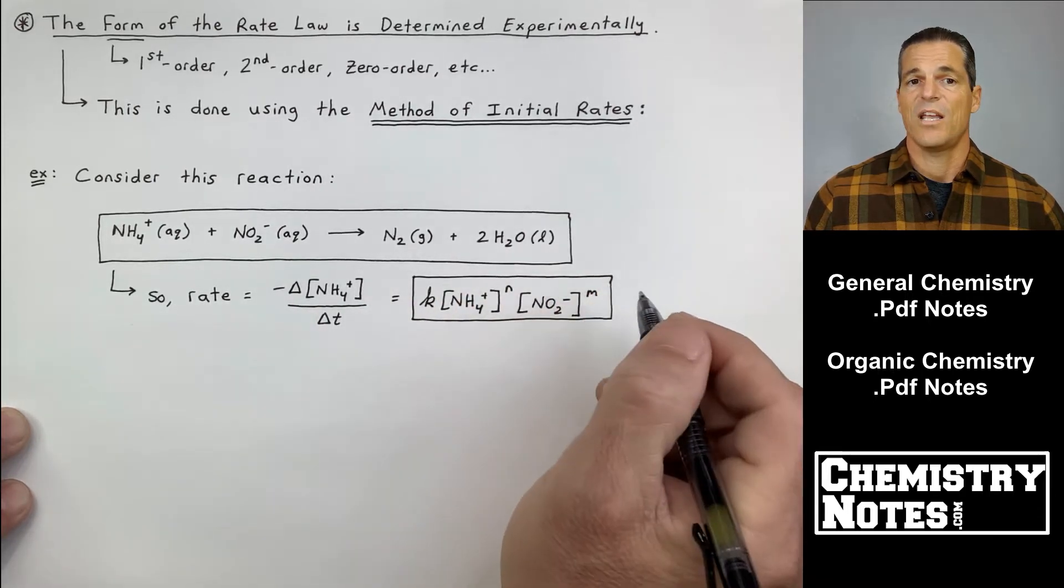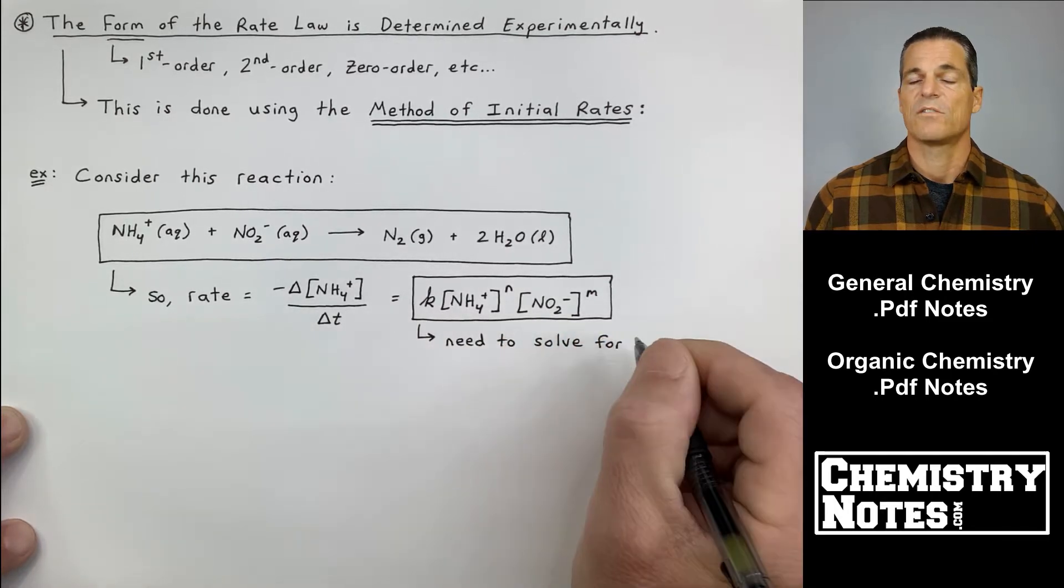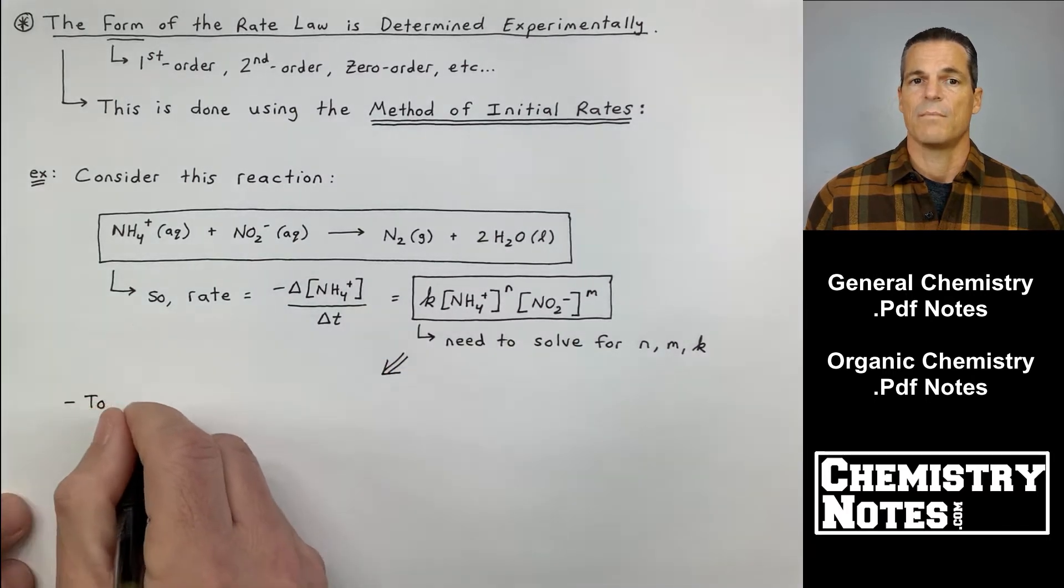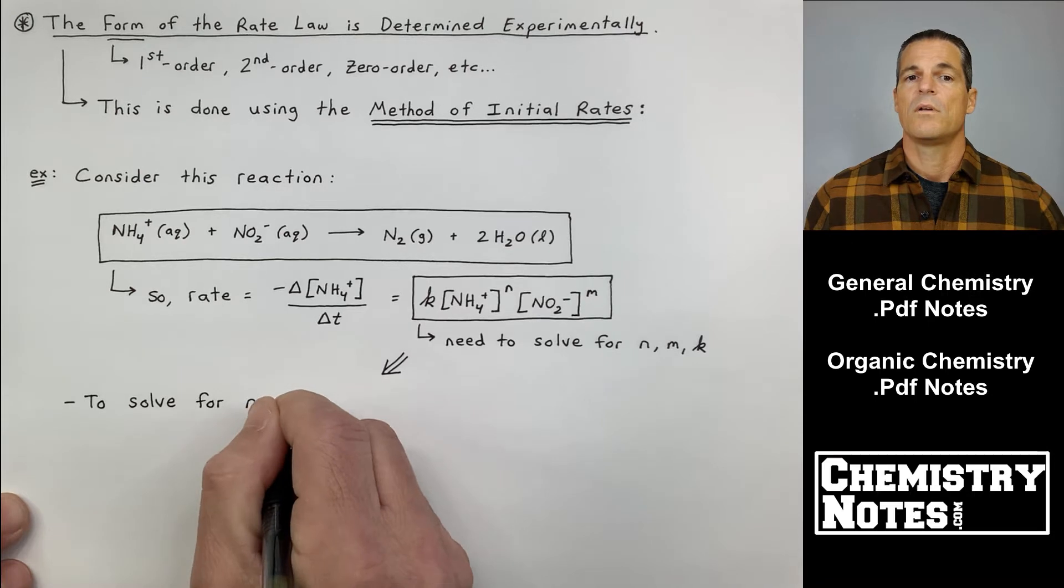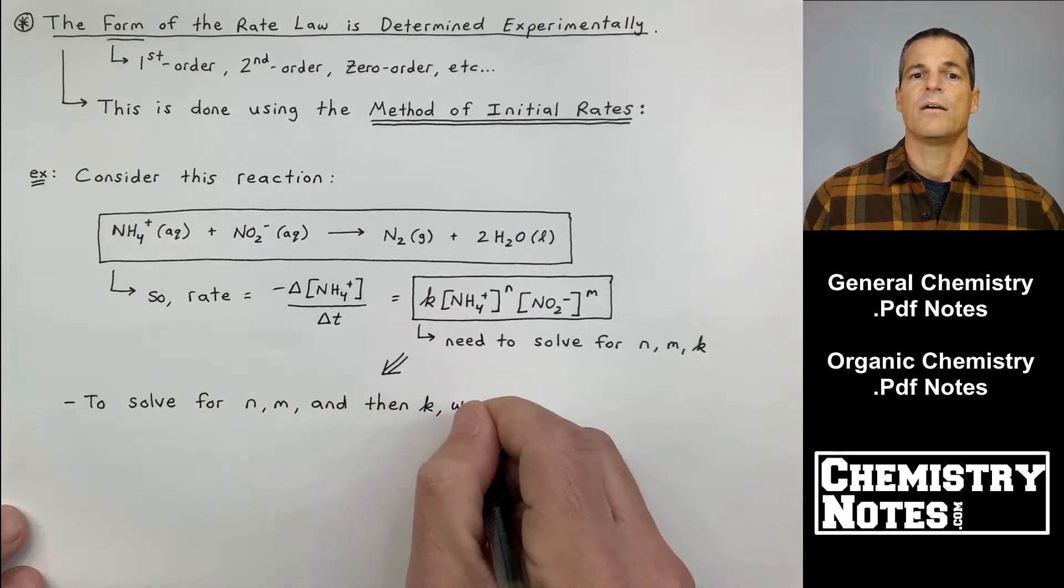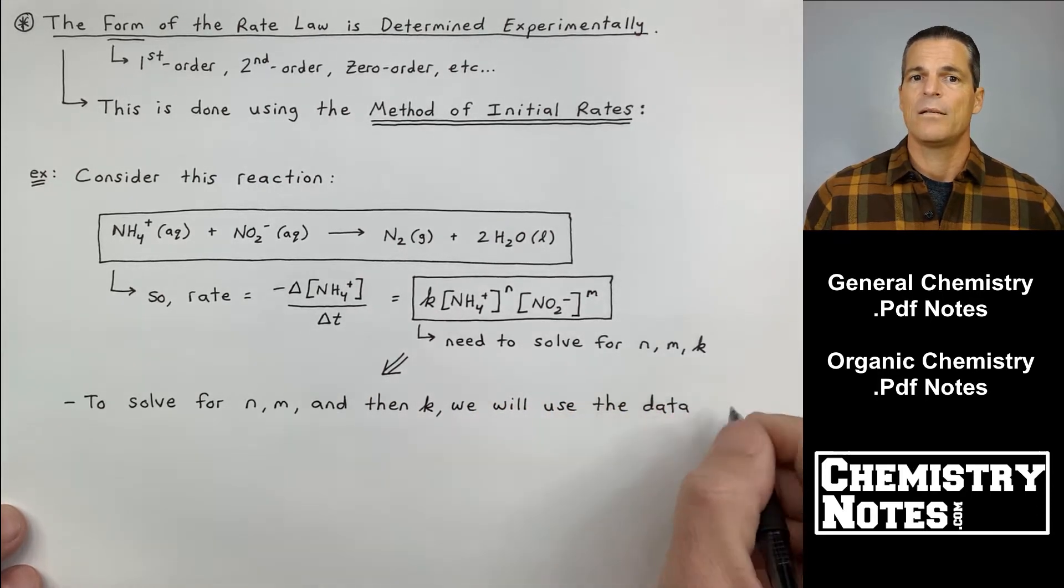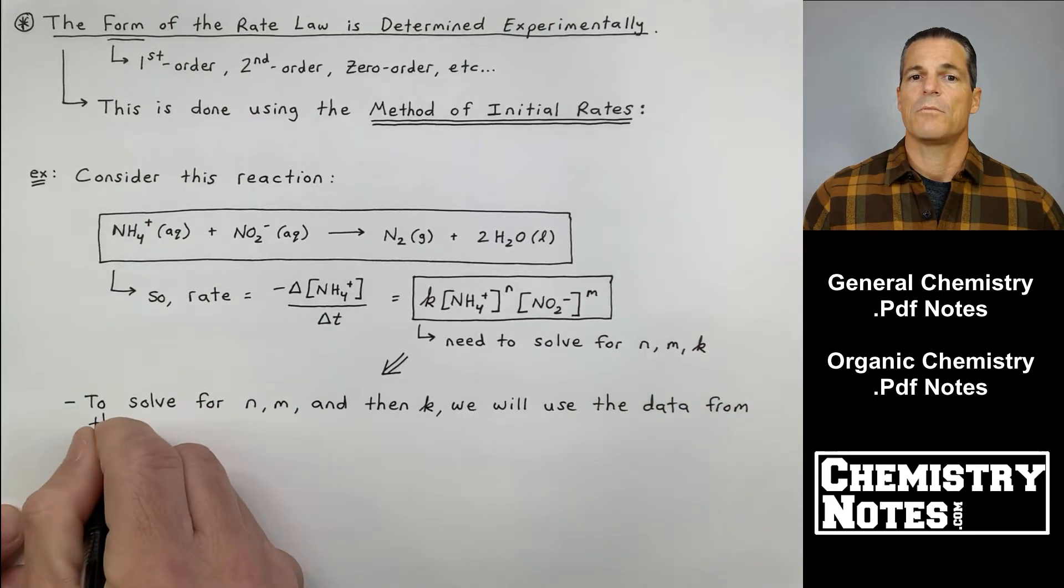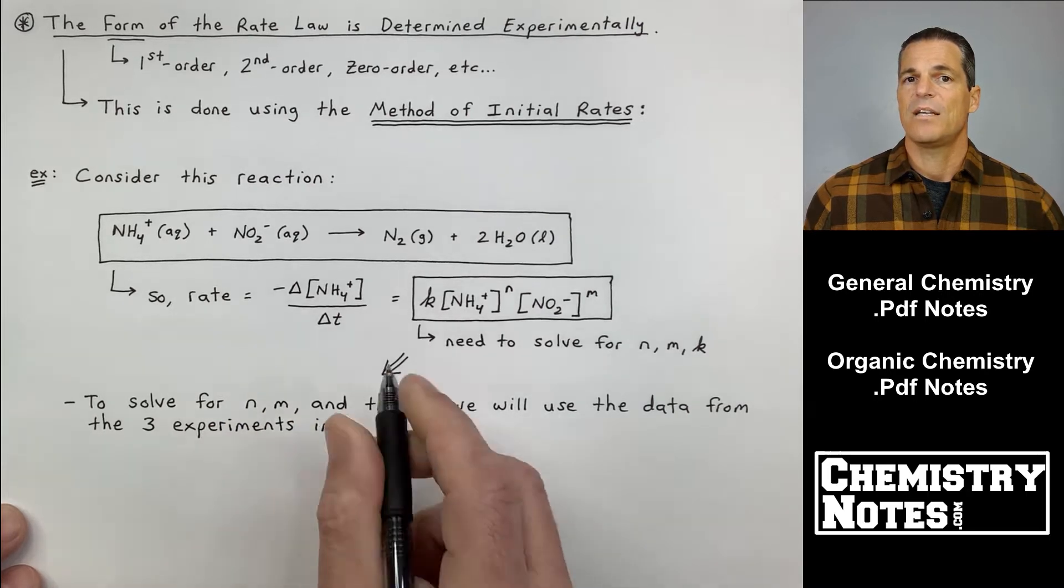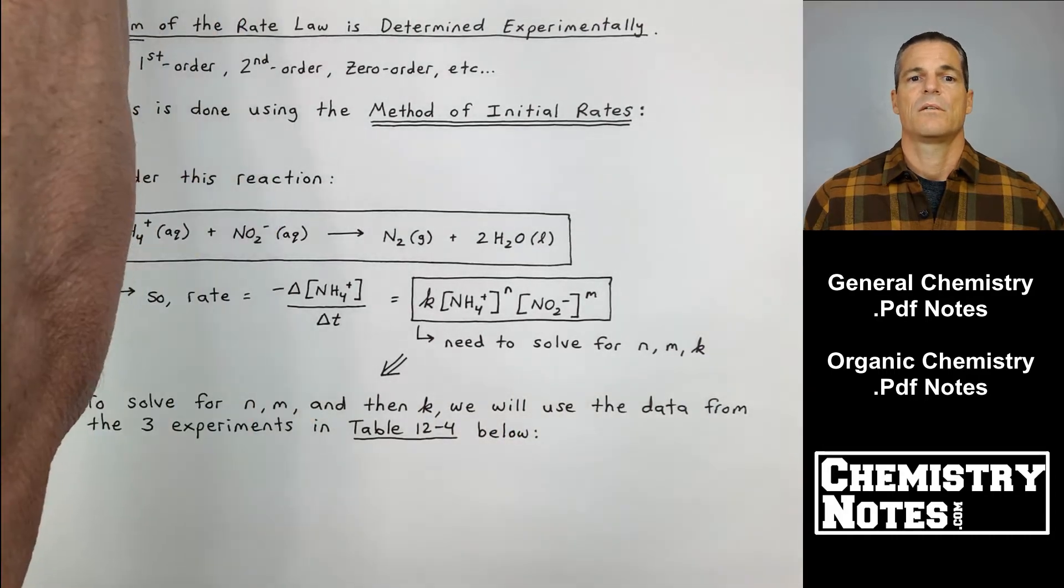If you were to write a rate law based on what we learned in the last video, you would say the rate equals minus the change in concentration of NH4+ over time. Or more importantly, the rate equals K times NH4+ to the power of N times NO2- to the power of M. We need to solve for N, M, and K. You will always solve for K after you've found out the orders of the reactions.